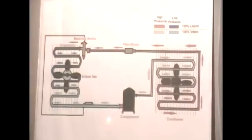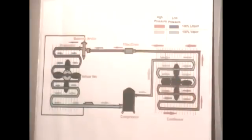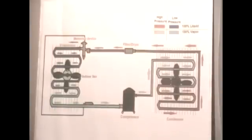At each cycle, the compressor takes your low pressure, low temperature vapor and compresses it to high pressure, high temperature vapor. It then condenses in your condenser coil to high pressure, high temperature 100% liquid. After the metering device, you will have 100% liquid, low pressure, low temperature. After picking up heat from your indoor air, the refrigerant boils and becomes 100% vapor, low pressure, low temperature, going back to your compressor. And that covers the major components in your AC system.